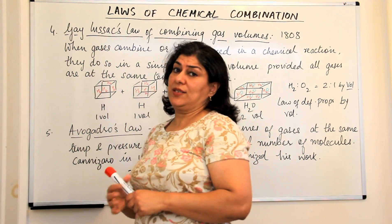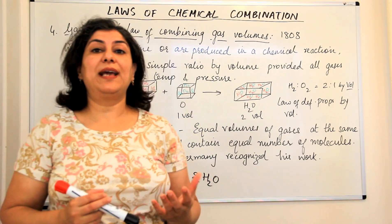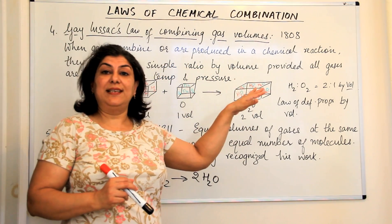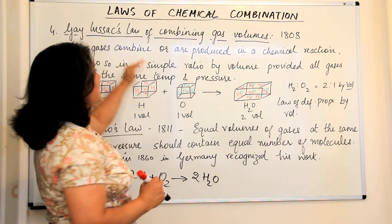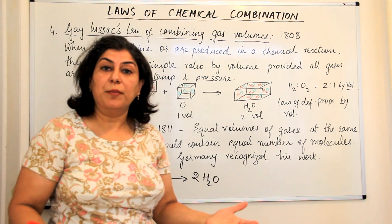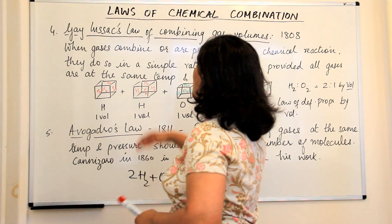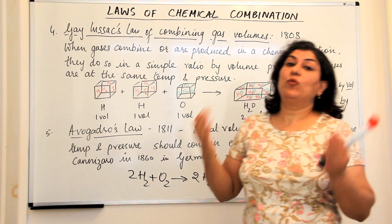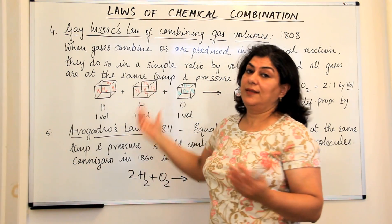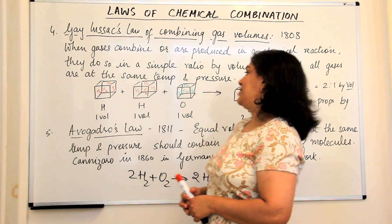But when Gay-Lussac noticed this about the combining gas volumes, his law only stated this: that when gases combine or are produced in a chemical reaction they do so in a simple ratio by volume, provided the temperature and pressure are constant.